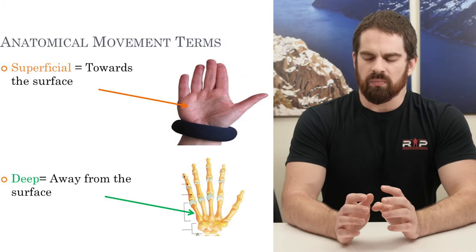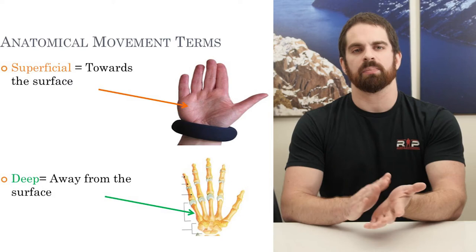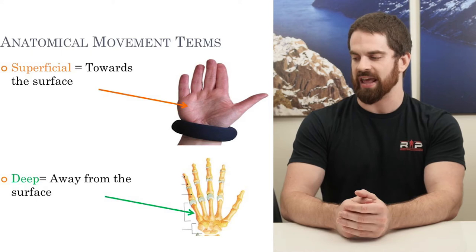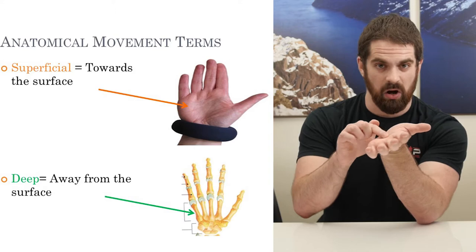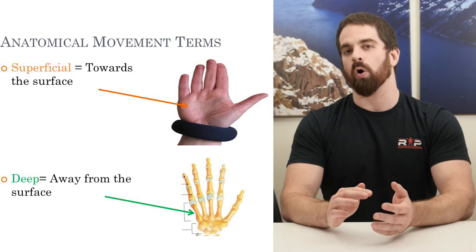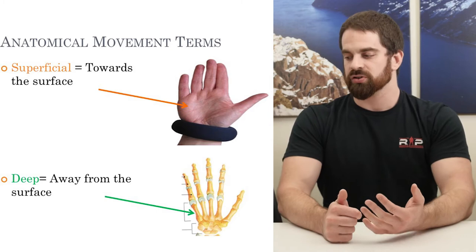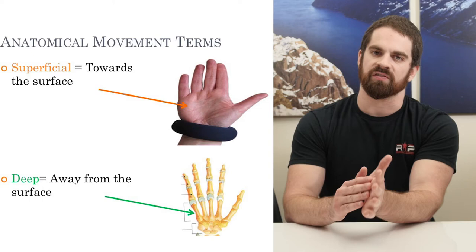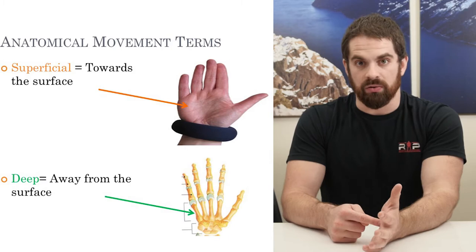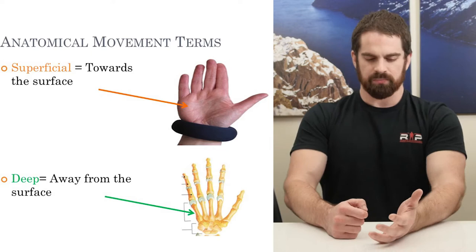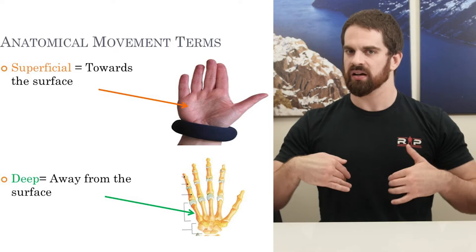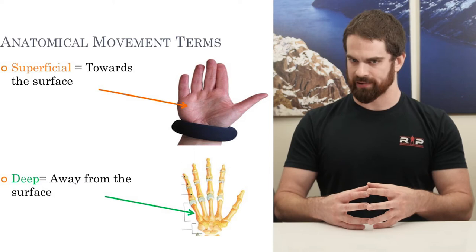Superficial versus deep is a pretty easy one. Superficial refers to anything up towards the surface — close to the skin level. Deep means away from the surface, actually inside the body. For example, the skin and subcutaneous fat near the hand are superficial, whereas the bones or muscles and connective tissue inside the hand are deep. Superficial means towards the surface; deep means inside the tissue.